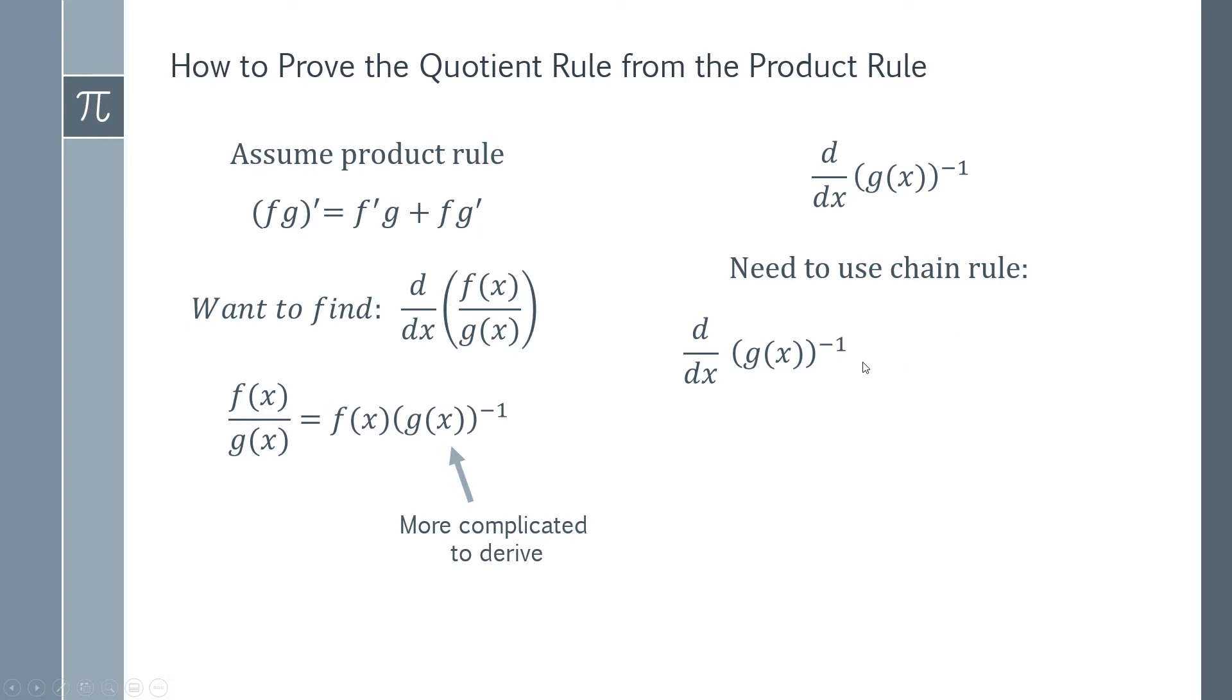The first thing you need to do is look at the outside function. We're going to look at this minus one that's going to come to the front, and then you're going to subtract one from the power giving you g(x) to the minus two. This is the derivative of the outside function. Then we need to look at the inside function g(x), and the derivative of g(x) is simply g'(x). So all of this multiplied together is going to be our derivative.